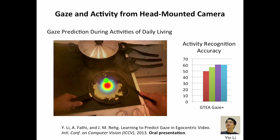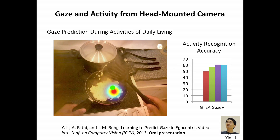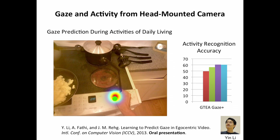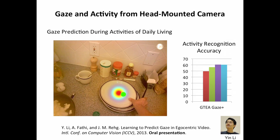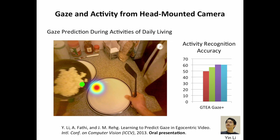Lastly, I'll talk about activity and attention. This is some work of my student Yin Li. The idea is to look at people performing everyday activities like cooking or activities of daily living, and understand both what they're doing and where they're attending. On the left is a typical activity in my lab — making scrambled eggs. The green dot is a gold-standard gaze-tracking measure from wearable eye-tracking glasses, but the colorful bullseye is the output of Yin's algorithm, which predicts where someone is looking based only on the video pixels, with no actual eye measurement at all. We can also recognize the activities in the same way.